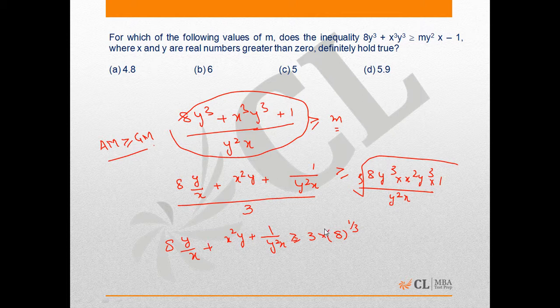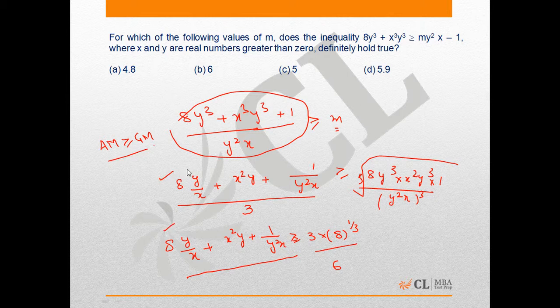Now on solving this we get this is my complete term, this is 6. And as I said before, this is the same term as it is, so definitely the value of this will be more than 6, so B would be the answer.